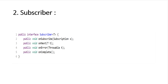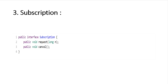The third interface is Subscription. Subscription represents the unique relationship between a subscriber and a publisher. It mainly contains two methods: the request method, which takes a long n as a parameter, and the cancel method. We will understand all these methods through the internal workflow while writing the code.